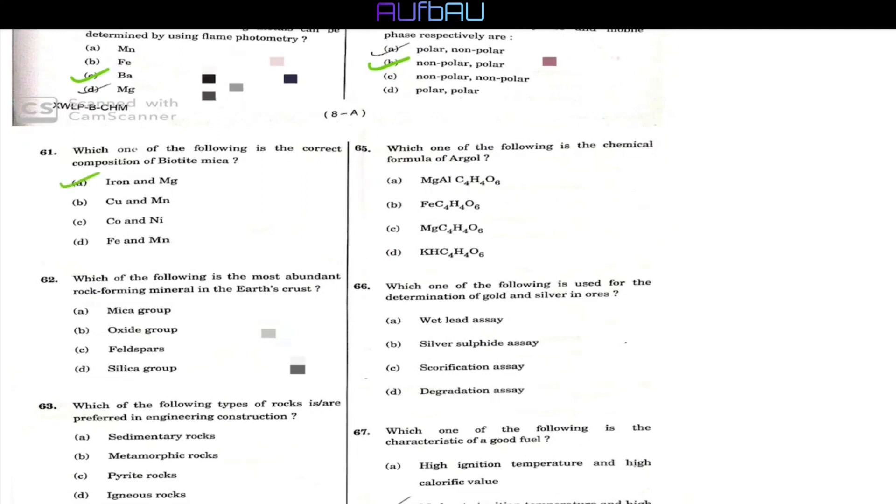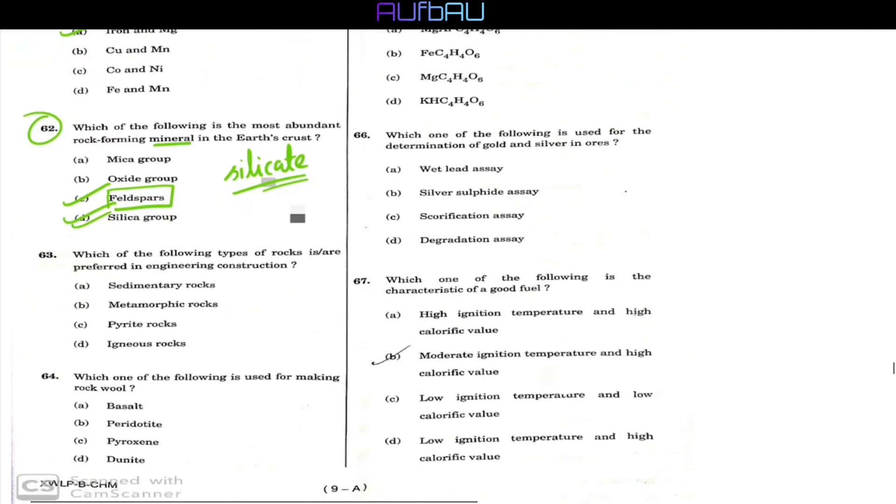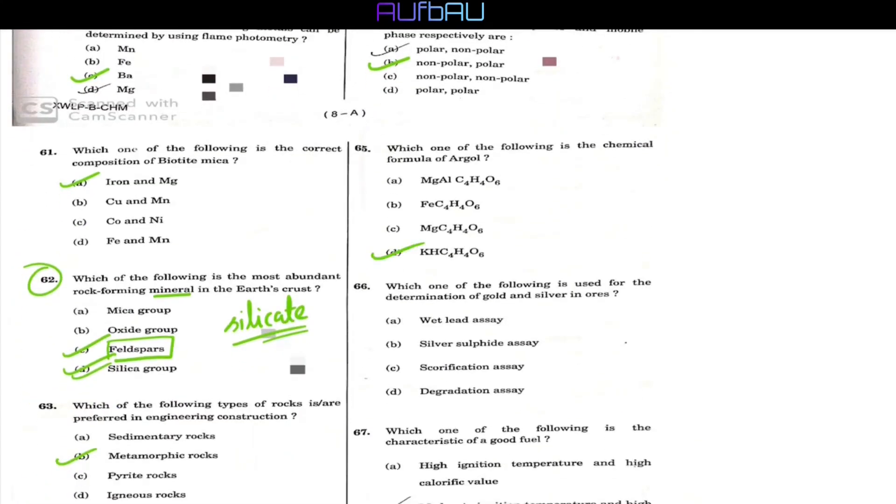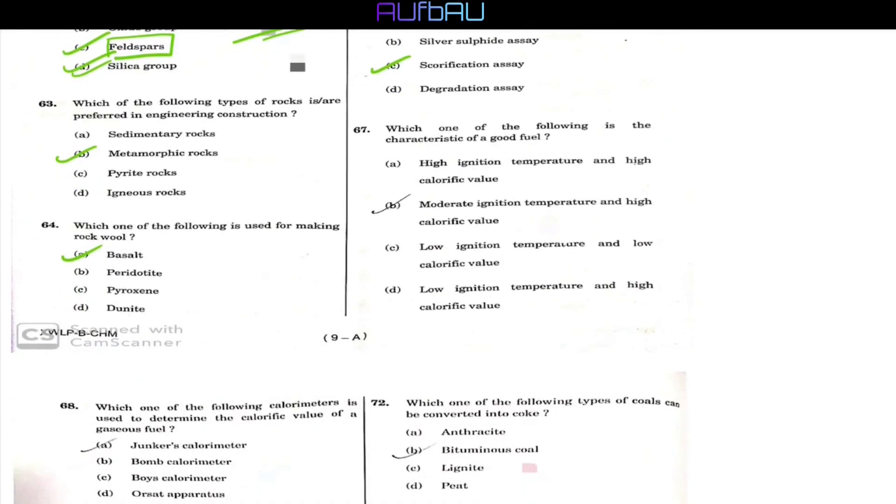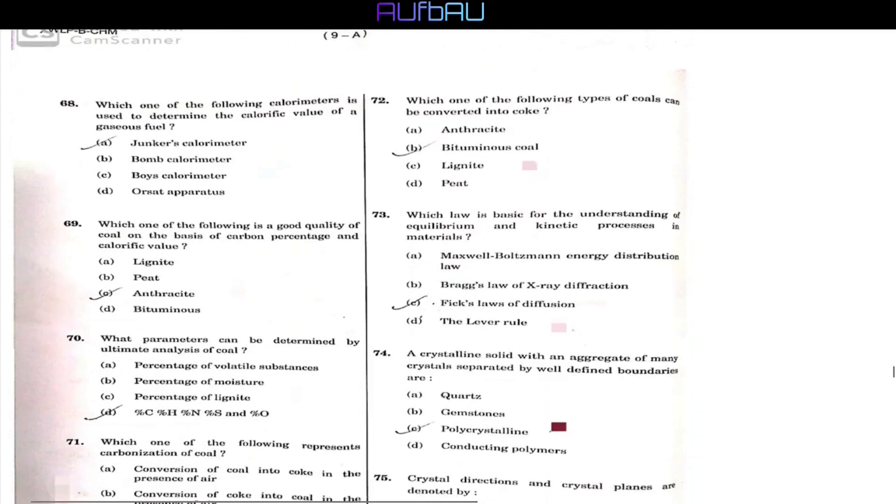For question 57, AgCl is the right option. For 58, the right option should be D. Three NMR signals one can get from this compound. The chromatography we use is normally reverse phase chromatography, so nonpolar, polar will be the right option. For 61, A should be the right option. For 62, D is right. But here is a confusion. The question asked for rock forming mineral. The answer should be, the correct option should be silicate. And minerals having silicate structure belong to feldspar group. So, either the correct option will be C or D. For 63, metamorphic rock should be the right answer. For making igneous rock, the main constituent should be basalt. Next is 65. The correct option should be option D. Then for determination of gold and silver in ores, option C, scorification assay should be the correct answer. For 67, option B should be the correct option.